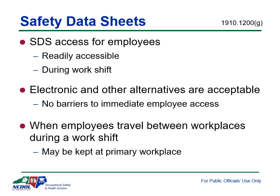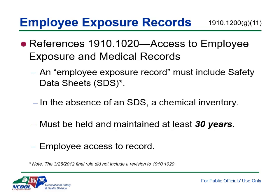Where employees travel between workplaces during a work shift — such as when work is carried out at more than one geographical location — safety data sheets can be kept at a primary workplace facility. The employer must still ensure employees can immediately obtain the required information in an emergency. If a chemical exposure occurs, employees have a right to access records of the exposure as well as associated medical records. The exposure record must include a copy of the safety data sheet for the chemical that was up to date at the time of exposure. If a safety data sheet is not available, a chemical inventory or other record must be kept identifying the toxic chemical and where and when it was used. Employee exposure records must be maintained for a minimum of 30 years.